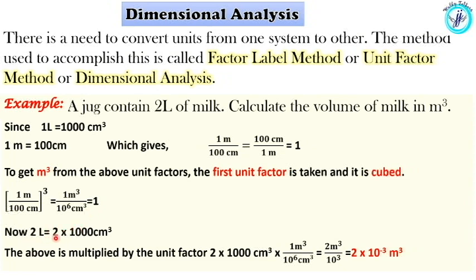2 liters is equal to 2 into 1000 centimeter cube. Then we multiply the unit factor: 2 into 1000 centimeter cube into 1 meter cube by 10 raised to the power 6 centimeter cube. We multiply the unit factor. 2 meter cube by 10 raised to 3, that is equal to 10 cube. The answer is 2 into 10 raised to negative 3 meter cube.